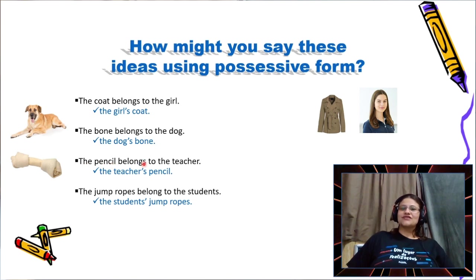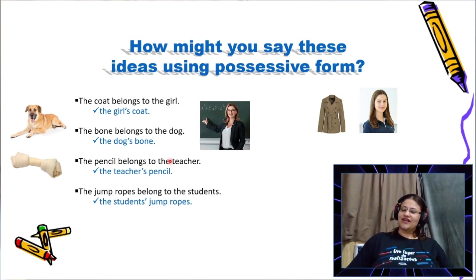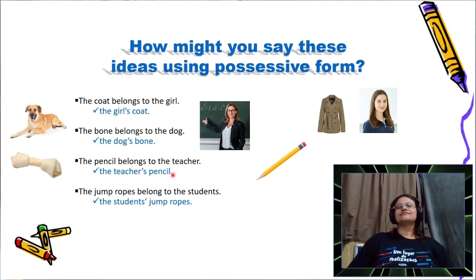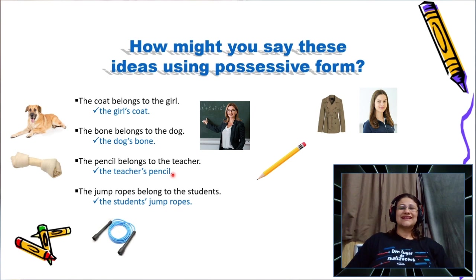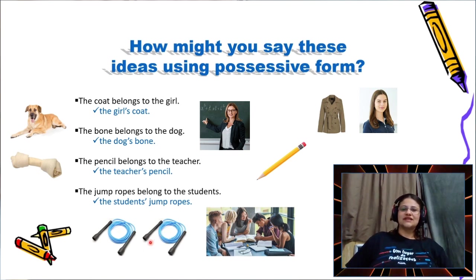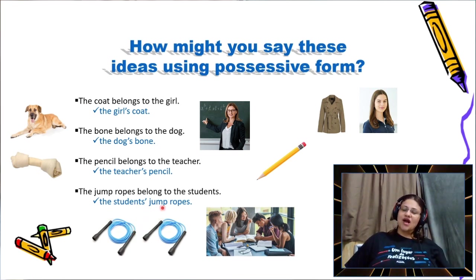The pencil belongs to the teacher. The teacher possesses something, and the possession is the pencil. So I can say the teacher's pencil. Another example: the jump ropes — in the plural, I have two jump ropes — belong to the students. So I can say the students' jump ropes.